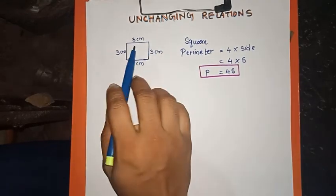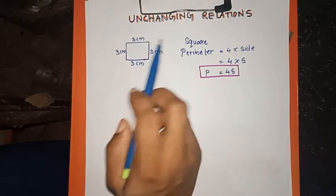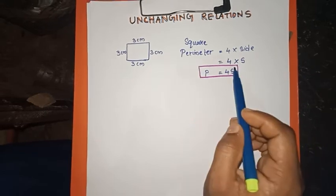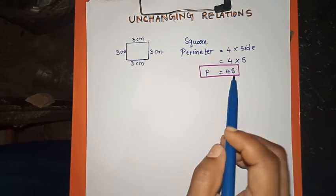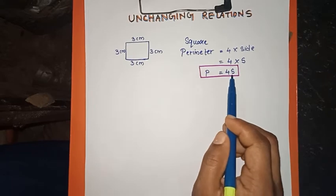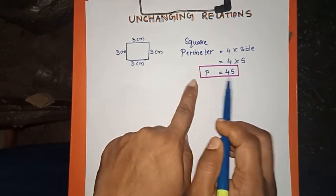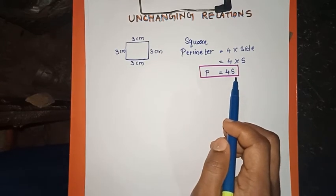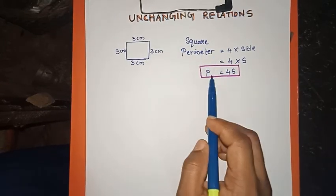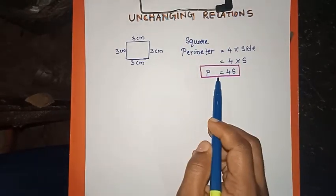For example, if the side is 3 cm, 5 cm, 7 cm, 10 cm, 12 cm, 20 cm, 30 cm, or 40 cm — using the formula, the perimeter is equal to 4s in every case. This is the formula.